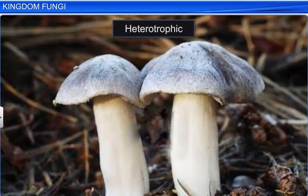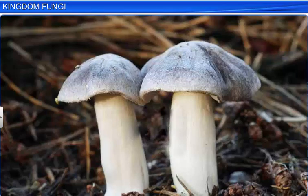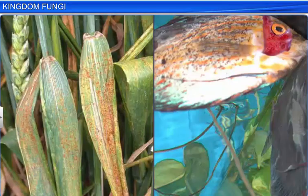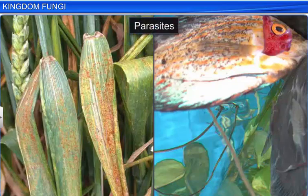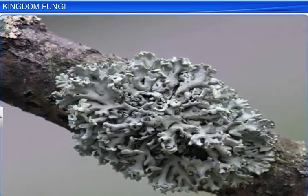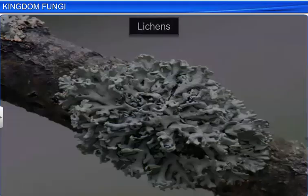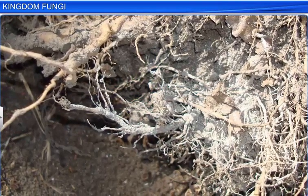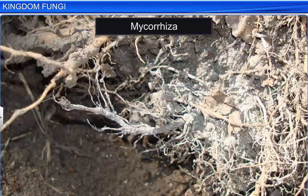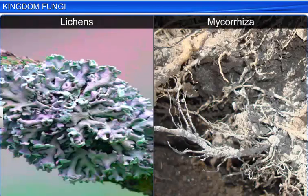Fungi are heterotrophic. Fungi that absorb organic matter from dead substrates are called saprophytes. Fungi which depend on living plants and animals are called parasites. Some fungi are associated with other organisms in mutually beneficial relationships. For example, fungi associate with algae to form lichens. Other fungi associate with the roots of plants as mycorrhiza. In both lichens and mycorrhiza, the relationship shared by fungi with the algae and the plant is called symbiosis.